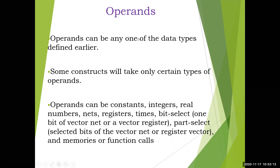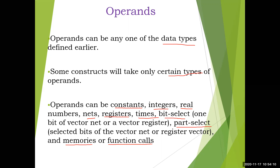Operands can be any one of the data types defined earlier. Some constructs will take only certain types of operands. Operands can be constants, integers, real numbers, nets, registers, time values, bit selects — one bit of a vector net or register — part selects, selected bits of a vector net or register, memories, or function calls.